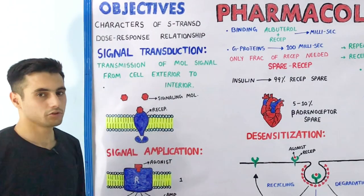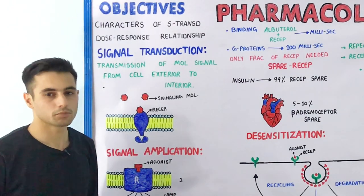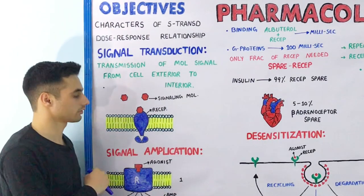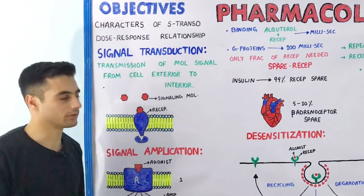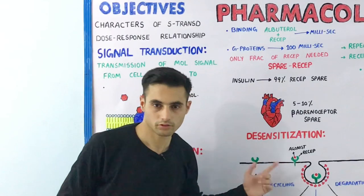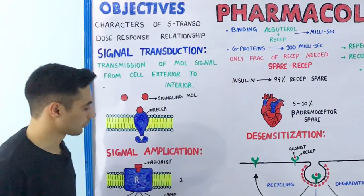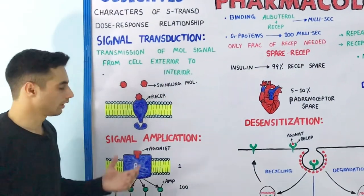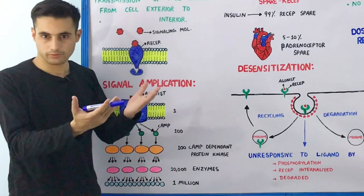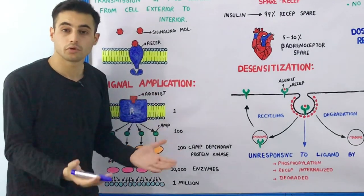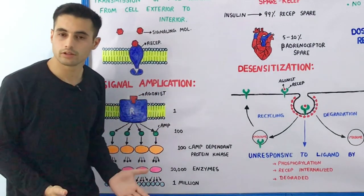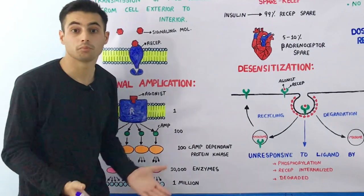Now there are two major characters or properties of signal transduction: one is signal amplification, and the other is desensitization. Let's discuss signal amplification first. As the name suggests, the signal is being amplified — the duration and the intensity of the signal is increased by manifold.